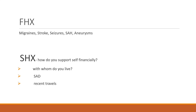Family history and social history are very important. In the family, you want to know — especially in first-degree relatives — any history of migraines, stroke, seizures, subarachnoid hemorrhage, or aneurysms. For social history, find out how they support themselves financially, with whom they live, to rule out stressors. Also ask about their smoking history, alcohol use, and the use of recreational drugs, as well as recent travel history.